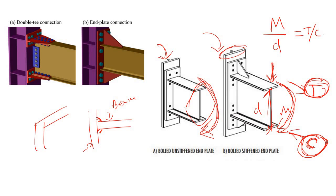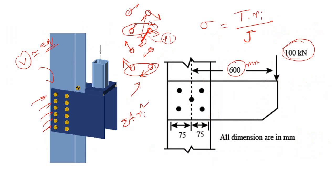This tension is transferred through the end plate to the bolts — all four rows of bolts carry the tensile force directly, then it is transferred to the column flange. The mechanism is completely different from torsional connection: in moment connection, the moment converts to direct tension in the bolts, whereas in torsional connection, stress is shared based on each bolt's radial distance.